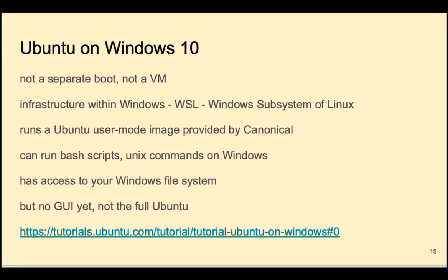One slightly related option on a Windows 10 computer is Ubuntu on Windows 10 — a collaboration between Canonical Ubuntu and Windows developers. It's not a separate boot and it's not a virtual machine or container; it's an infrastructure within Windows that runs an Ubuntu user mode image provided by Canonical. You can run bash scripts, Unix commands on Windows, and those Unix commands have access to your Windows file system so you don't need a separate file system. It doesn't have a GUI and it's not the full Ubuntu, but it's enough to get a lot done when you need Linux commands on a Windows computer.